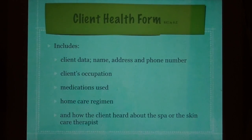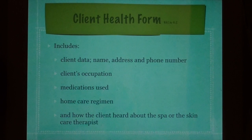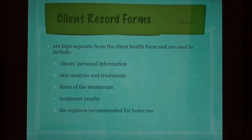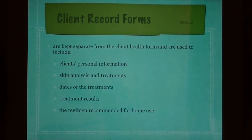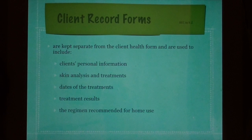The client health form includes client data such as name, address, phone number, the client's occupation, medications used, home care regimen, and how the client heard about the spa or skin care therapist. Client record forms are kept separate from the client health form and are used to include the client's personal information, skin analysis and treatments, dates of treatments, treatment results, and the regimen recommended for home use.